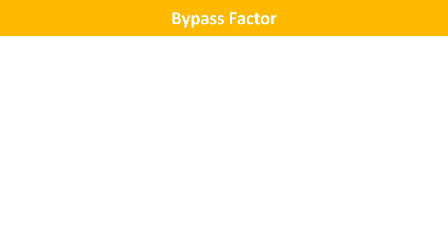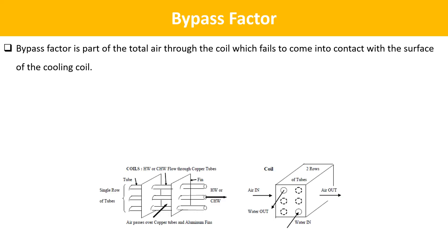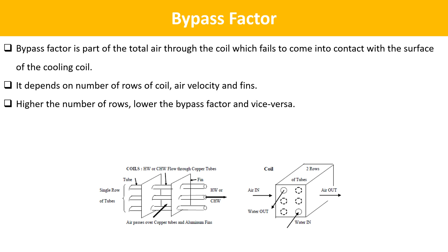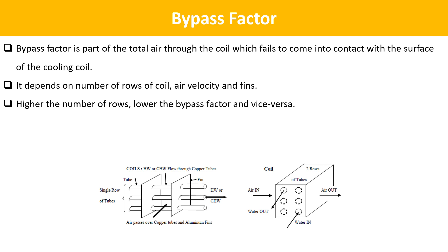The next term is Bypass Factor. Bypass factor is the part of the total air through the coil which fails to come into contact with the surface of the cooling coil. It depends on the number of rows of coil, air velocity, and fins. Higher the number of rows, lower the bypass factor, and vice versa. Higher velocity means a higher bypass factor. The velocity should not be too high, otherwise a large amount of air will get past the coil without sufficient heat transfer due to short contact time.